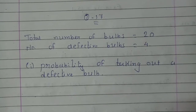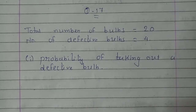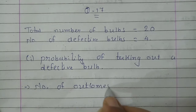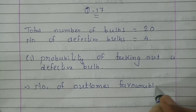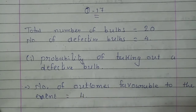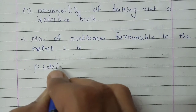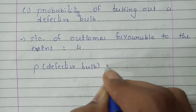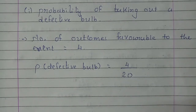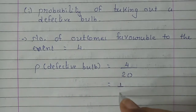In this lot, the total number of defective bulbs is 4, so the number of outcomes favorable to this event is 4. The probability of drawing a defective bulb equals favorable outcomes (4) divided by total outcomes (20). Since 4 fives are 20, the probability is 1 upon 5.